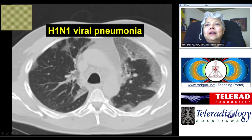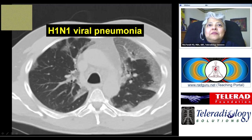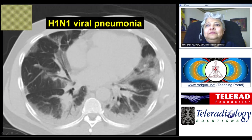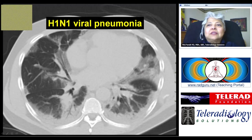This is an example of H1N1 viral pneumonia we came across last year. There are subpleural ground glass opacities, some patchy and more confluent on the left. Lower down, subpleural ground glass opacities are turning to consolidation with air bronchograms in some areas.